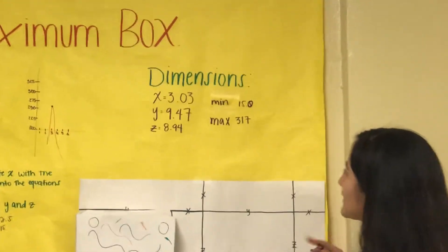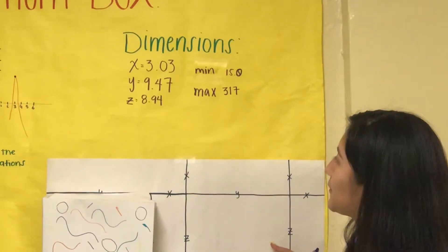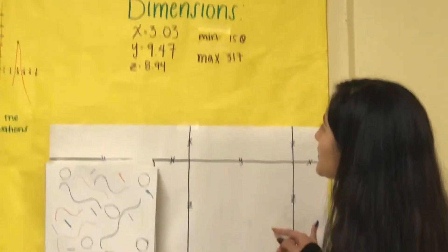And then the dimensions were x equals 3.03, y equals 9.47, z equals 8.94.